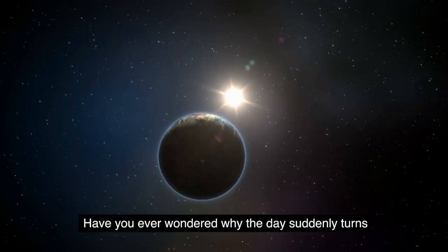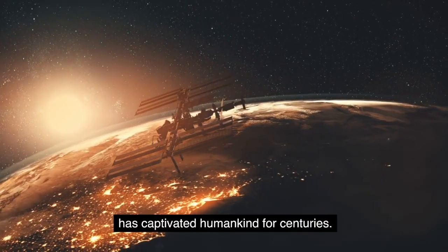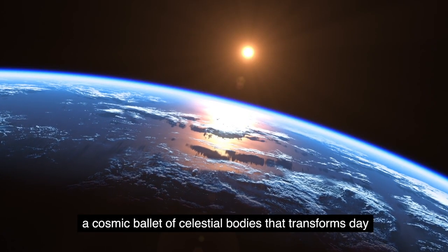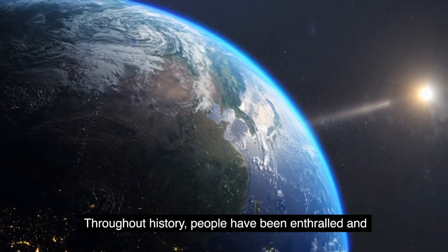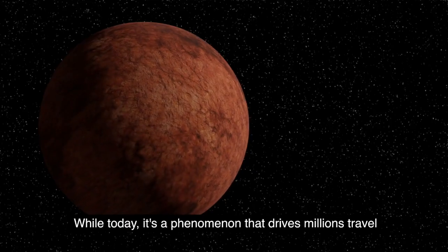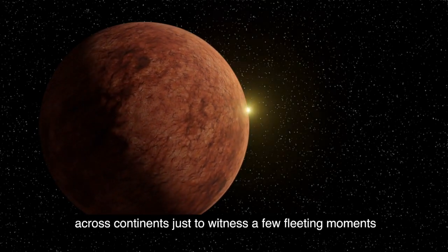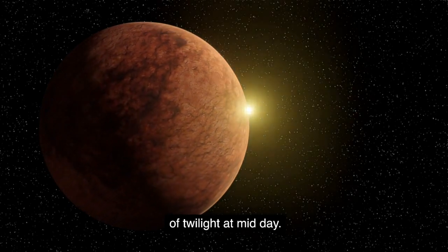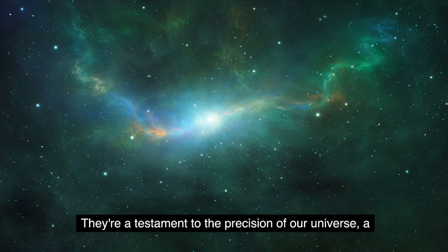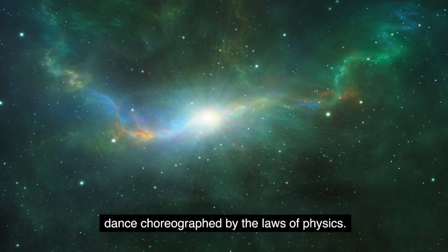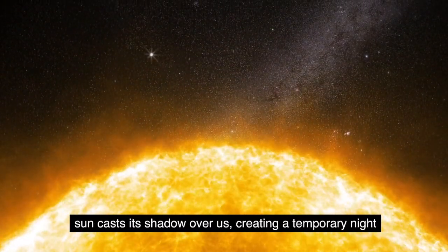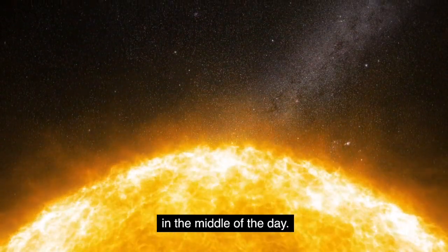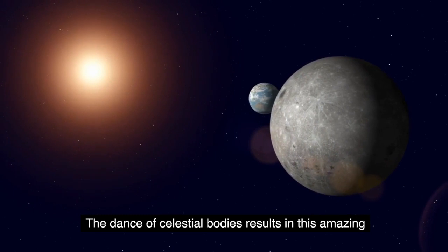Have you ever wondered why the day suddenly turns into night during a solar eclipse? It's a spectacle that has captivated humankind for centuries. A cosmic ballet of celestial bodies that transforms day into night and casts an eerie twilight over the Earth. Throughout history, people have been enthralled and mystified by this rare event. Ancient cultures saw it as a sign from the gods, while today, it's a phenomenon that drives millions to travel across continents just to witness a few fleeting moments of twilight at midday. Solar eclipses are more than just a beautiful spectacle. They're a testament to the precision of our universe. A dance choreographed by the laws of physics. The moon, perfectly aligned between the Earth and the sun, casts its shadow over us, creating a temporary night in the middle of the day. The dance of celestial bodies results in this amazing spectacle.